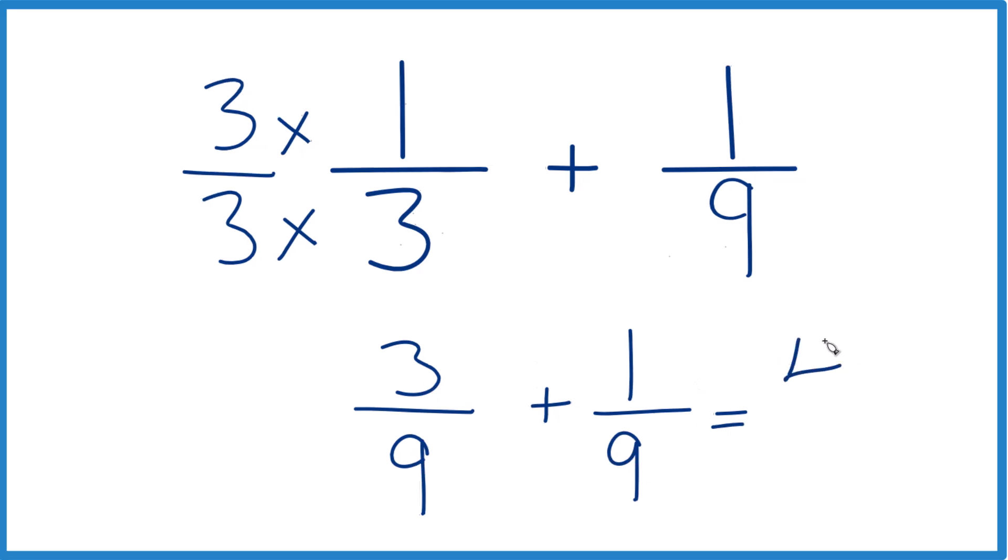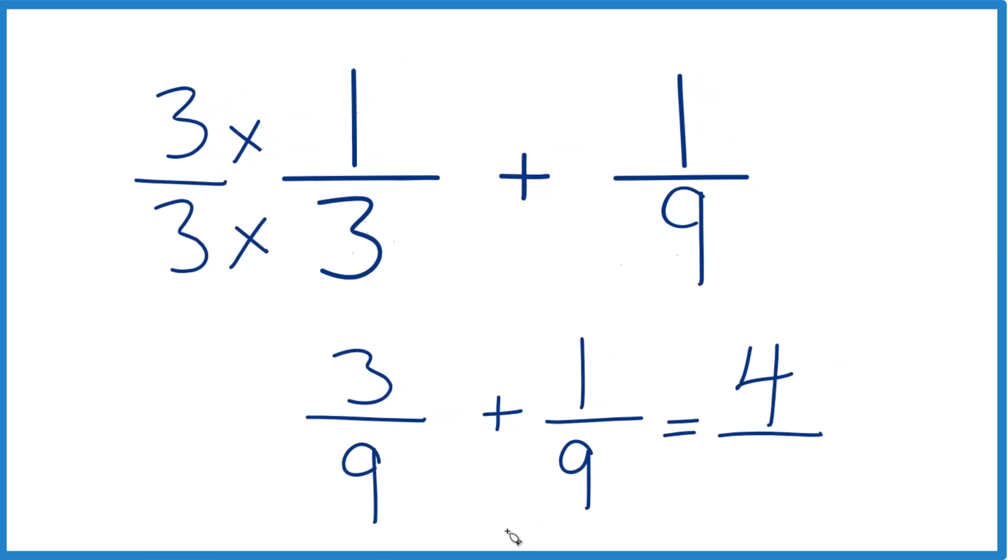3 plus 1 is 4. And then when we add fractions, if the denominator is the same, just keep it the same here. 4 ninths. So in answer to our question, 1 third plus 1 ninth, that equals 4 ninths. This is Dr. B. Thanks for watching.